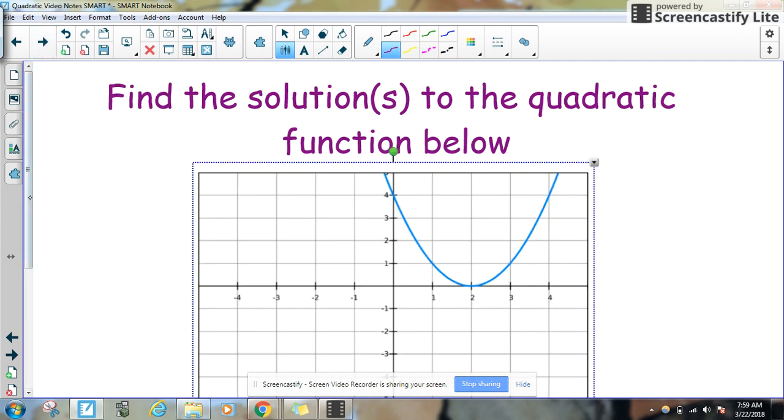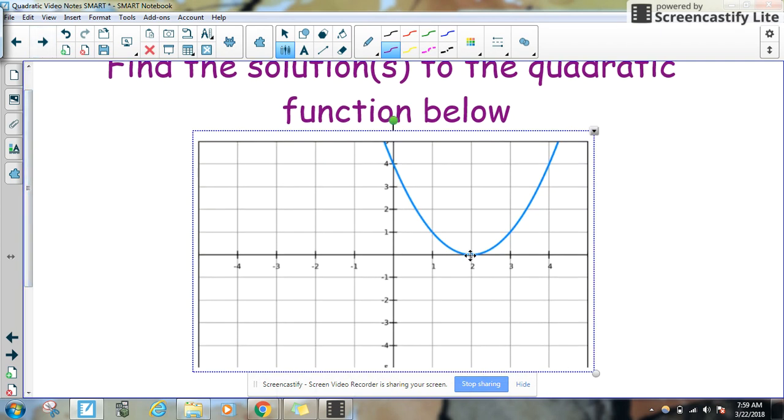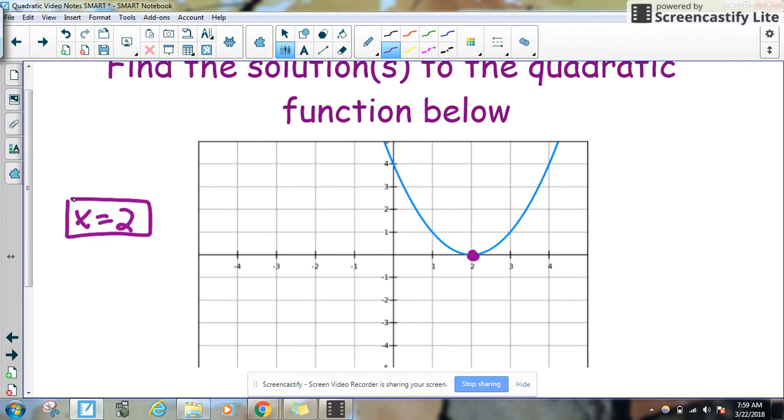Let's do one more example. This particular quadratic only crosses the x-axis one time, and that is located right here. So it would be x equals 2. So this particular quadratic only has one solution at x equals 2.